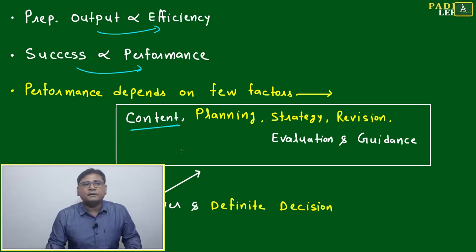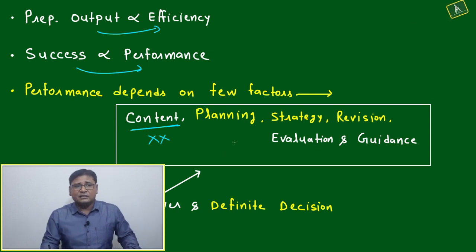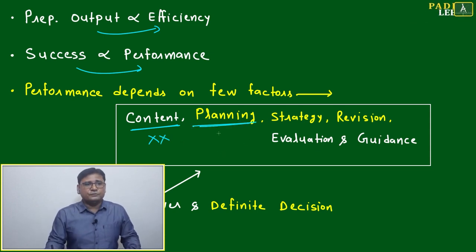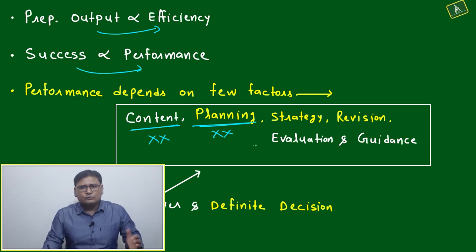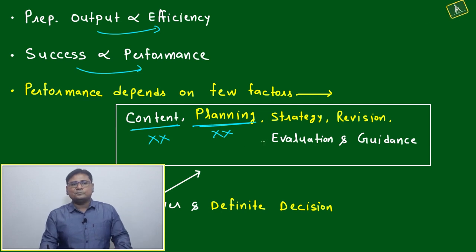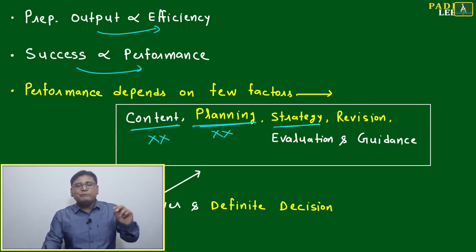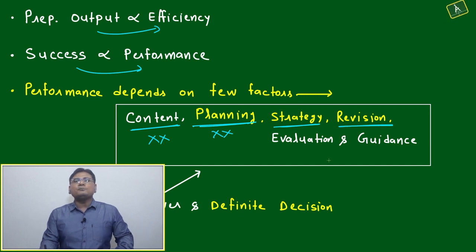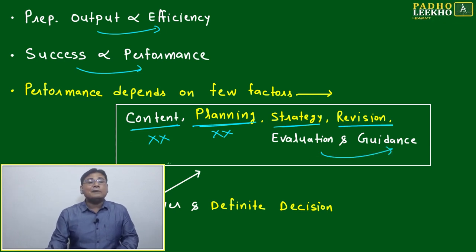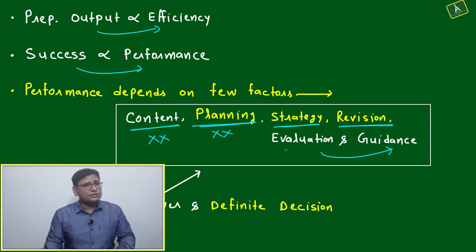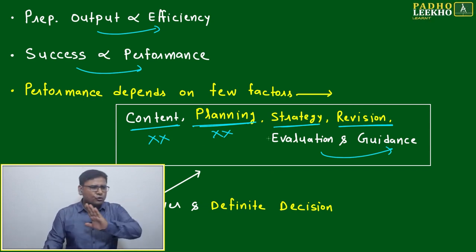Difficult to get the desired result. If planning is not good, you keep putting effort but with wrong or insufficient content. Your strategy may have fatal problems that cannot fulfill the requirement. You're not able to do revision properly, evaluation, guidance. All these factors we must consider - in a nutshell, these four or five factors matter.